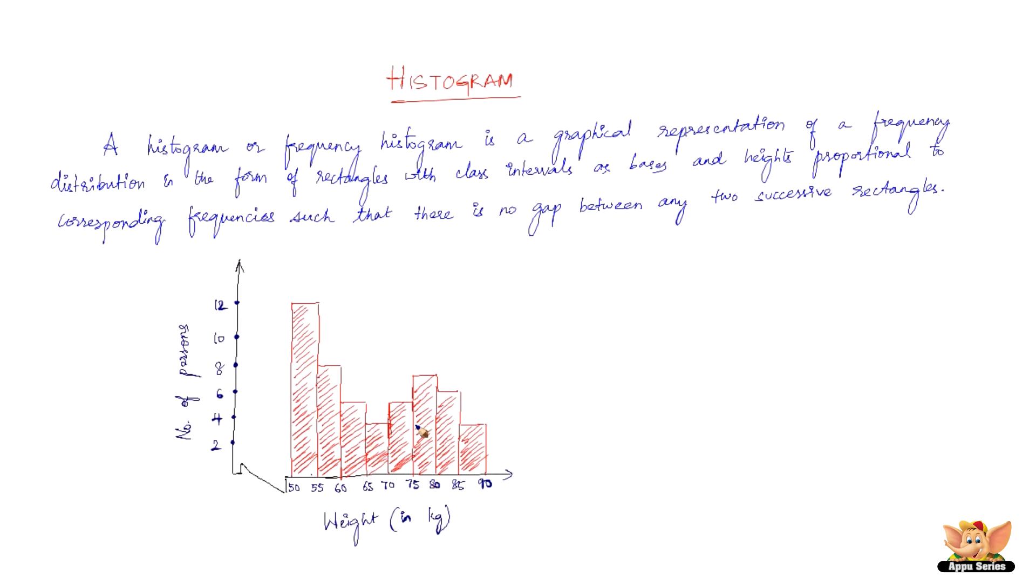So this is how histogram is different from bar graph. Now reading this again will make a lot more sense. A histogram or frequency histogram is a graphical representation of a frequency distribution in the form of rectangles with class intervals as bases. You can see the class intervals are bases here. Class interval is 5, 5, 5 and so on. So that is the base. The width of the base is given by the class interval.